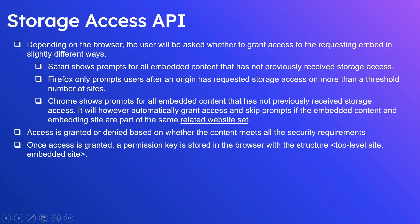The user prompt behavior differs by browser. Safari prompts for all embedded content that has not previously received storage access. Firefox only prompts users after an origin has requested storage access on more than a threshold number of site visits — until five cross-origin requests, Firefox will not prompt the user and the request is automatically approved. Chrome prompts for all embedded content that has not previously received storage access, and also automatically grants access and skips prompts if the embedded content and the embedding site are part of the same Related Website Set.